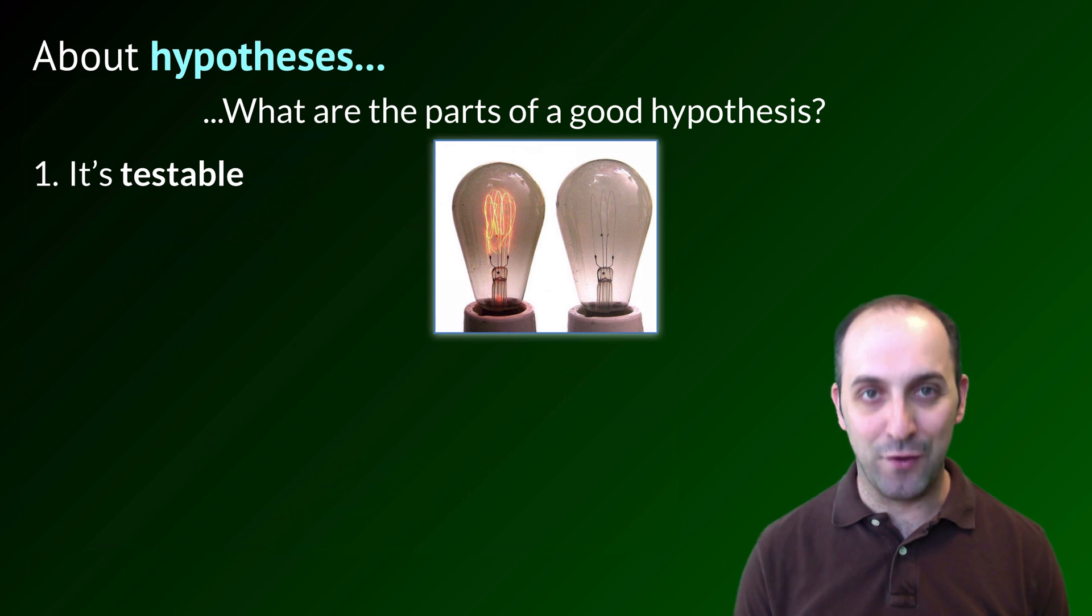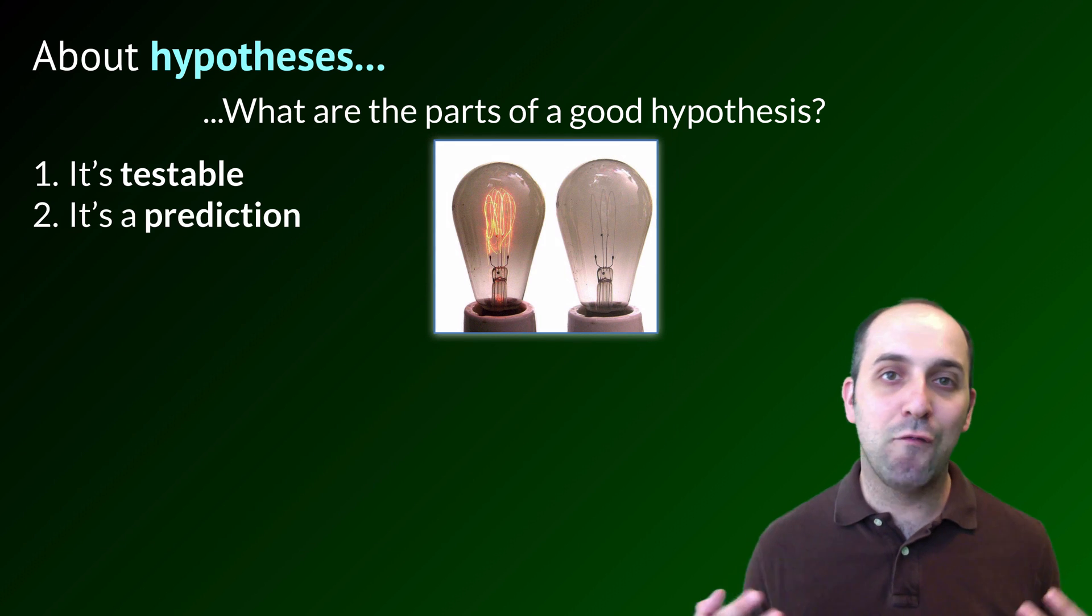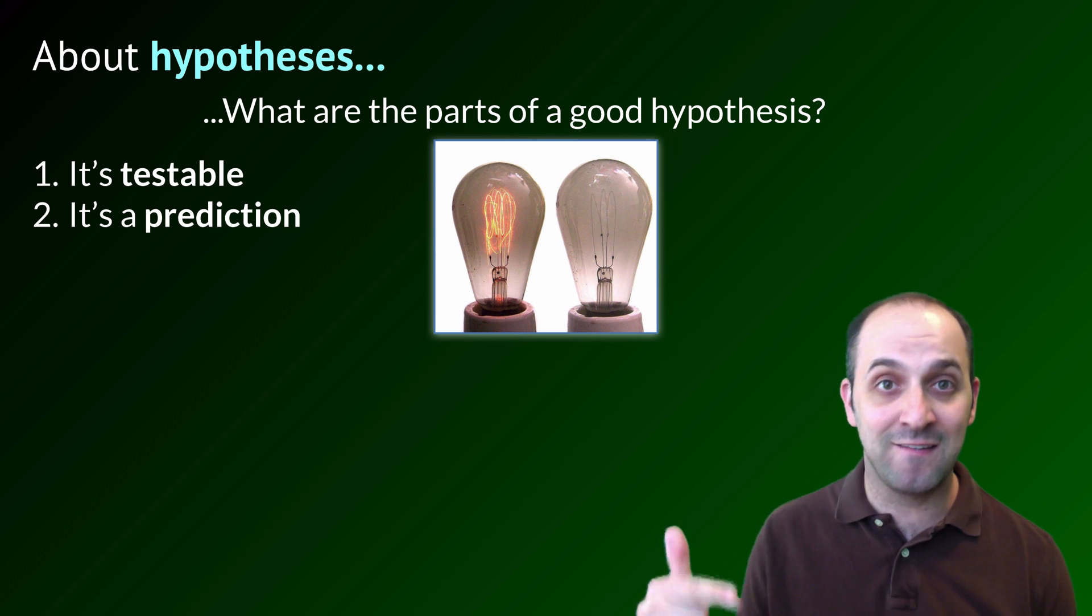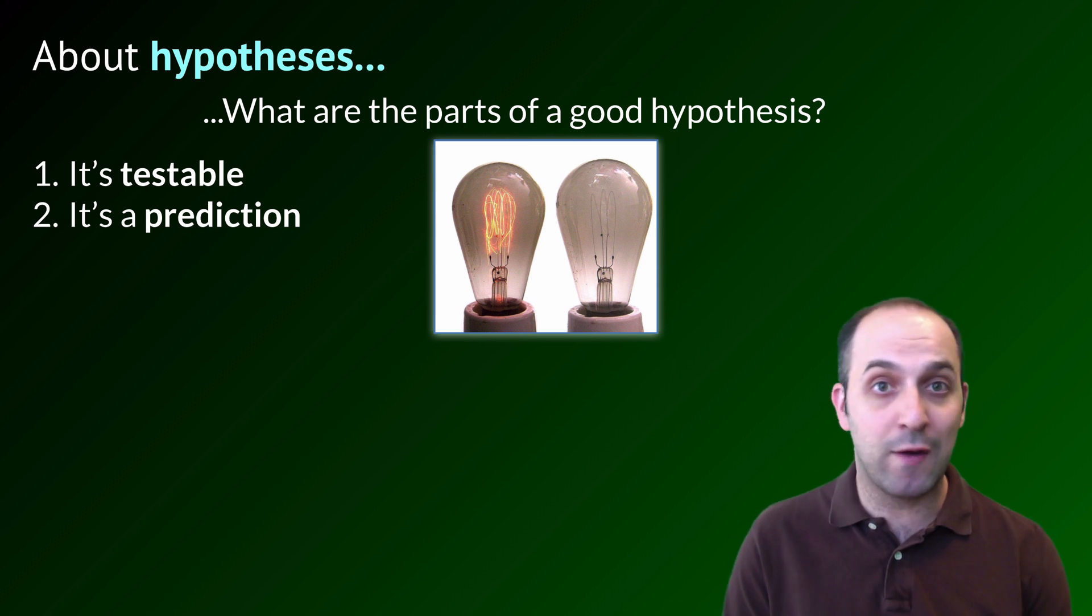But fortunately there aren't too many malevolent spirits that really interact with our light bulbs on a daily basis. The second part of what makes a hypothesis a hypothesis is that it's predictive. If I say that this light bulb is out because there's no power going to it, I've predicted that that in fact is the case. I can go and investigate whether or not my prediction is supported by reality or not by looking and seeing whether or not my light bulb is plugged in.